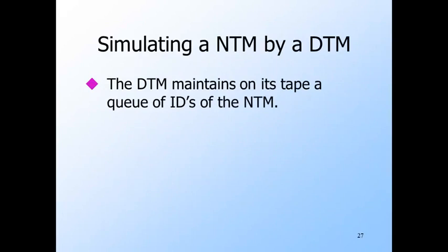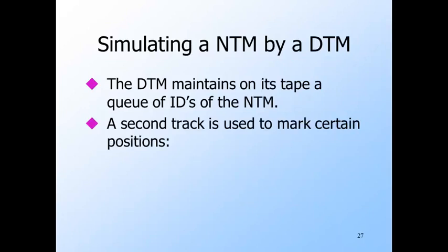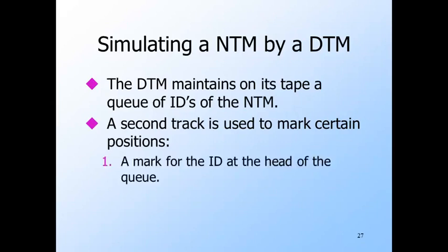The basic trick is to use the tape of the deterministic machine to represent the queue of IDs of the non-deterministic machine. The deterministic machine makes a systematic search of all the IDs the non-deterministic machine can reach. If it finds one with a final state, then the deterministic machine accepts. But if it never finds one, the simulation may go on forever, but the deterministic machine will never accept. We should become aware that Turing machines sometimes run forever without accepting or halting, and we can't tell whether the Turing machine will eventually halt or not — that is, you can't tell whether a Turing machine is an algorithm.